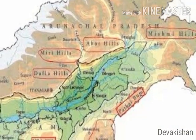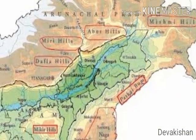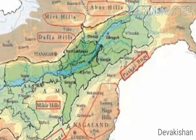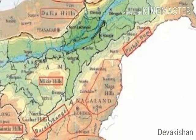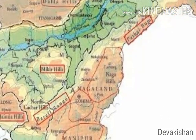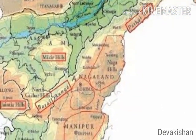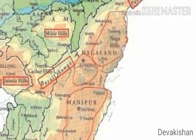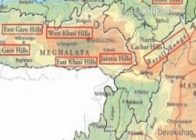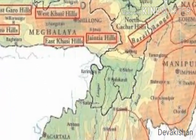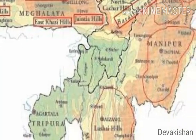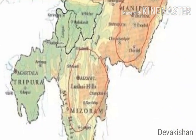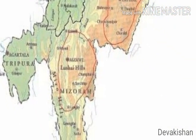Regionally, the Purwanchal are known as Patkai Hills in Arunachal Pradesh, the Naga Hills in Nagaland, Manipuri Hills in Manipur, Khasi Hills, Garo Hills, and Jaintia Hills in Meghalaya, and Mizo Hills in Mizoram.